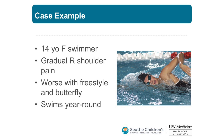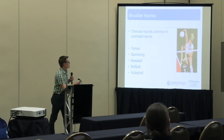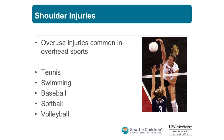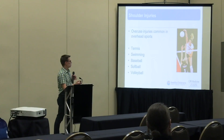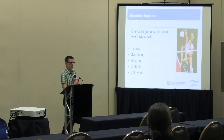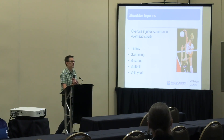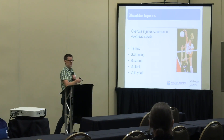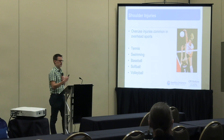Moving on to shoulders and upper body. Classic example: a 14-year-old swimmer with gradual right shoulder pain, worse with freestyle and butterfly, swimming year-round. Overhead overuse injuries of the shoulder are really common in overhead sports — tennis, swimming, baseball, softball, volleyball. At PPEs I counsel athletes doing these sports to let me know if they start having shoulder pain, so we can modify activity, get them into PT, and address biomechanical issues early rather than late.